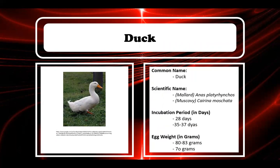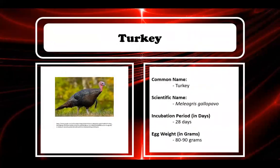For mallard duck, the scientific name is Anas platyrhynchos; for Muscovy duck, it is Cairina moschata. Incubation period: 28 days for mallard, 35 to 37 days for Muscovy. Egg weight: 80 to 83 grams for mallard, 70 grams for Muscovy. Next, turkey: scientific name Meleagris gallopavo, incubation period 28 days, egg weight 80 to 90 rams.